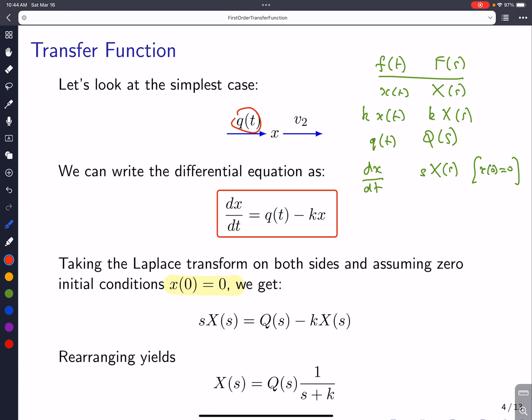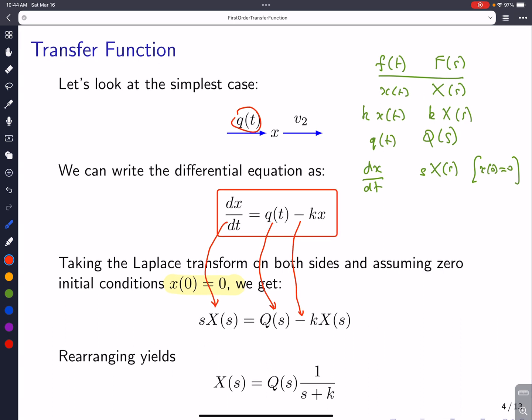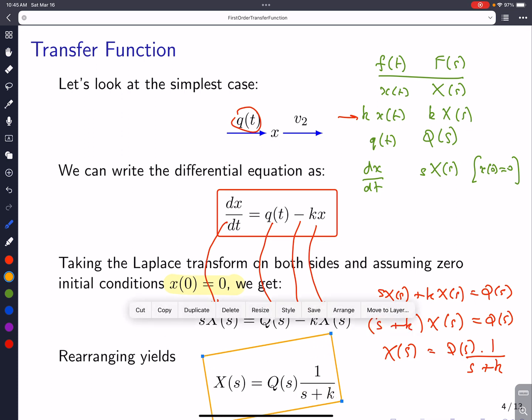So, as you can see, this piece here turns into sX(s). This Q turns into Q(s). And then we keep the minus, of course. And then the kX turns into k times big X. So now all we have to do is rearrange this. sX(s) plus kX(s) equals Q(s). Then we pull out the X(s), and we get X(s) equals Q(s) times 1 over (s plus k). That's the Laplace transform of this differential equation.